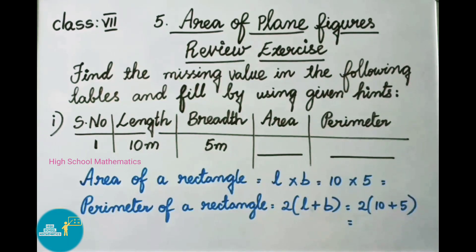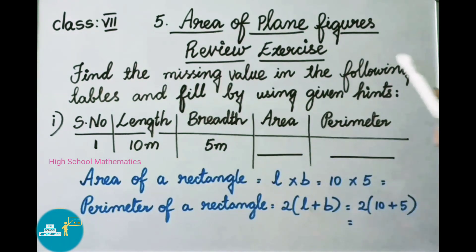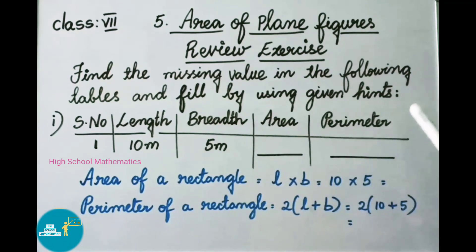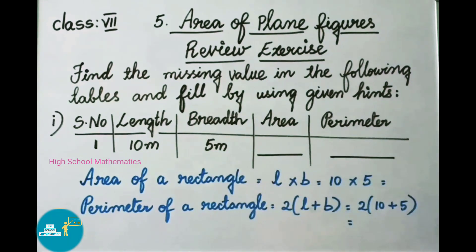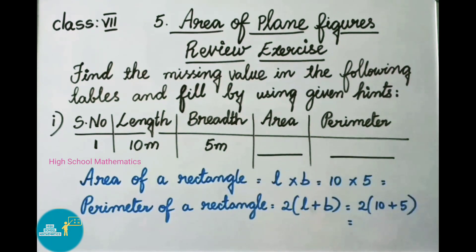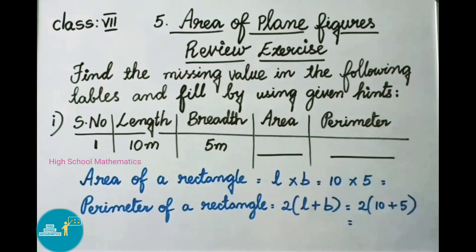Find the missing value in the following tables and fill using the given hints. For the first one, they have given length 10 meters and breadth 5 meters. Now we shall find the area of a rectangle and the perimeter of a rectangle.